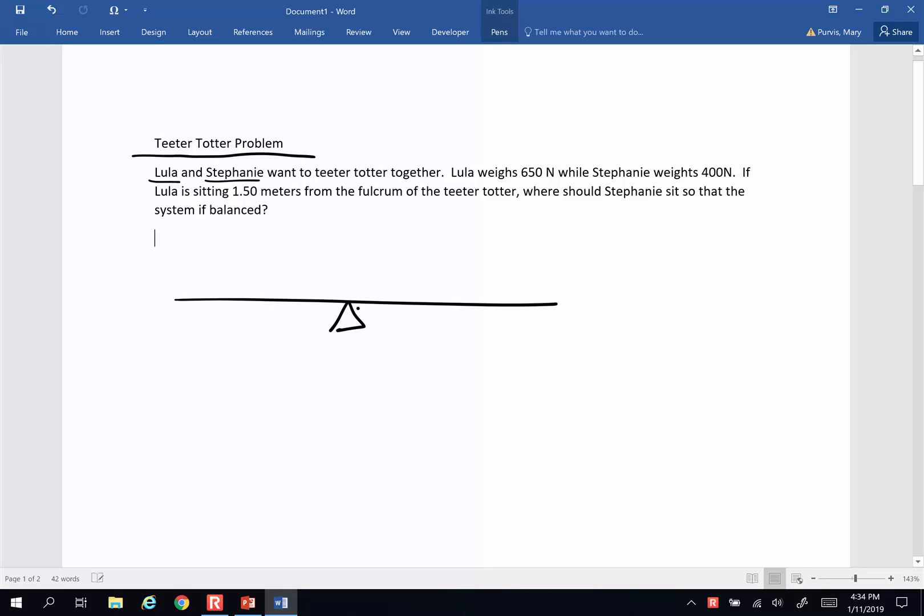And Lula weighs 650 newtons, so we're going to put Lula down here with some fabulous hair. She weighs 650 newtons, meaning her force of gravity vector will be straight down perpendicular to the teeter-totter. And Stephanie weighs 400 newtons.